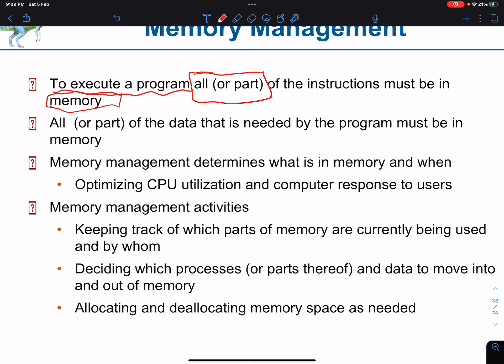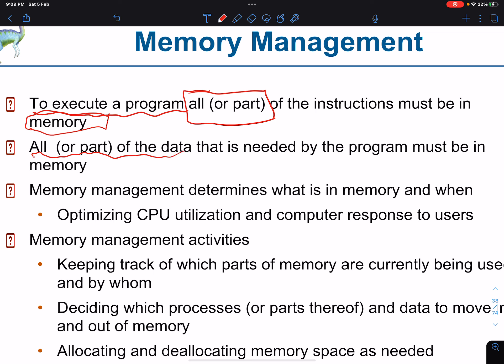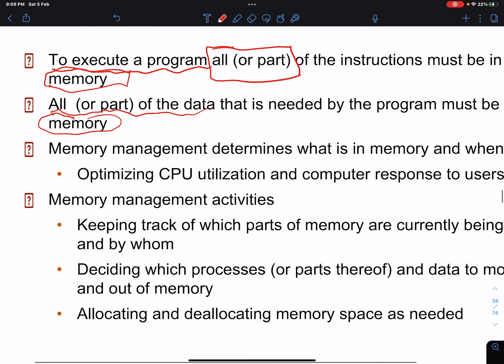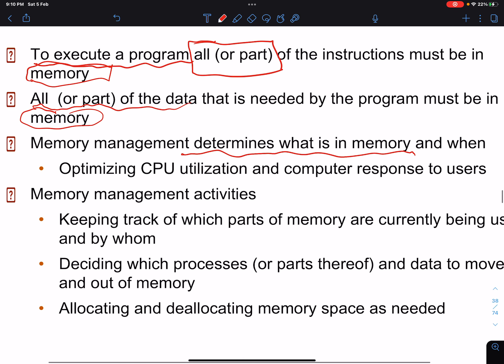Some stuff is loaded into what we call virtual memory, which is handled differently. The rule of thumb for actual execution is that it has to be in main memory. Virtual memory will be dealt with in chapter 10. This also applies to data — whatever data is needed by the program has to be in memory. That's why the memory manager is part of the kernel, running all the time. Memory management determines what is in memory and when it will be there.